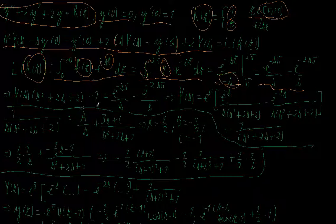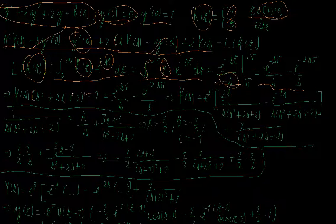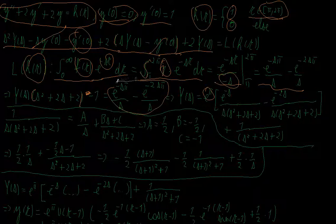Now I rearrange everything and plug in the initial conditions. Since y(0) = 0 and y'(0) = 1, I get Y(s) · (s² + 2s + 2) − 1 = e^(−sπ)/s − e^(−2sπ)/s. So Y(s) equals e^(−sπ)/(s(s² + 2s + 2)) − e^(−2sπ)/(s(s² + 2s + 2)) plus 1/(s² + 2s + 2).